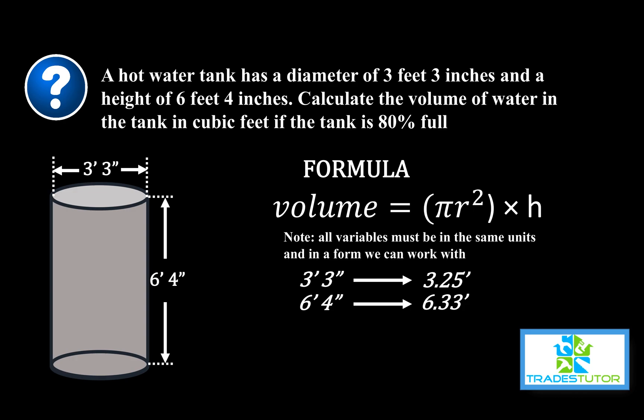Now, the other thing is we have the diameter is 3.25 feet. We got to change that to the radius. So, the radius is equal to the diameter divided by 2. 3.25 divided by 2 is 1.625 feet. So, now we have all the variables we need, and we just got to plug them in.